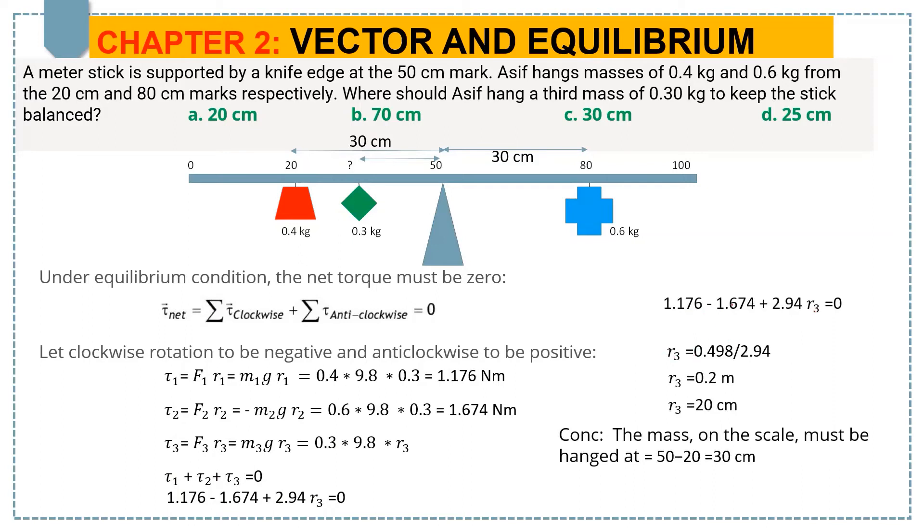R₃ equals—these two terms will go on the right side, and then we will divide the summation of both values by 2.94. So you can see we get R₃ = 0.2 meters.